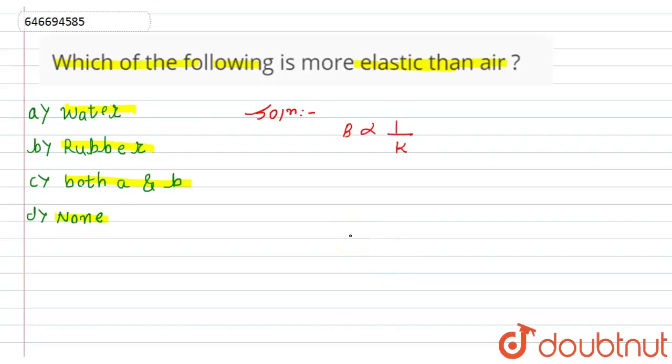More compressibility means less elastic. We know that air is more compressible than water, so the compressibility for air is more compared to water. Water is less compressible.